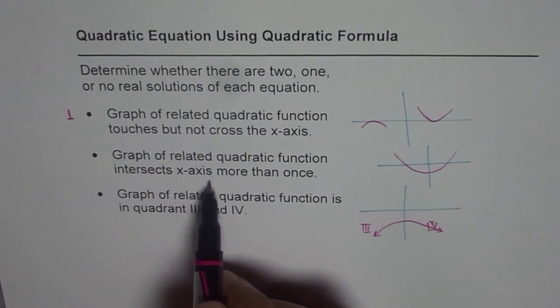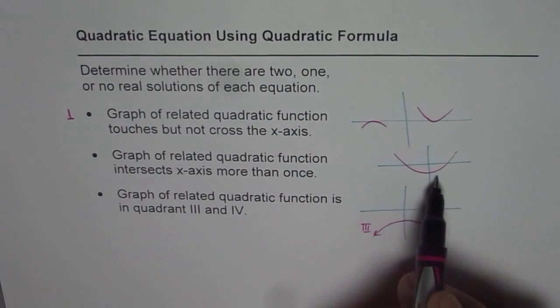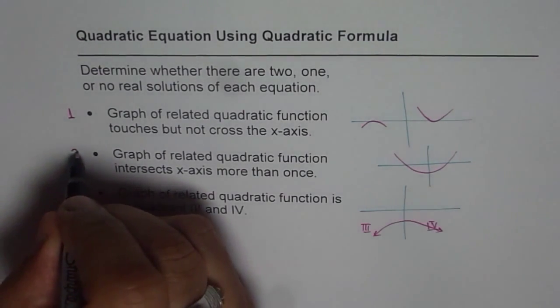If the graph crosses more than once, it can do it only twice. So we have two real solutions.